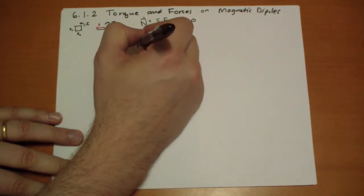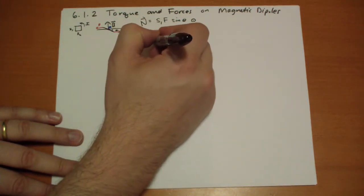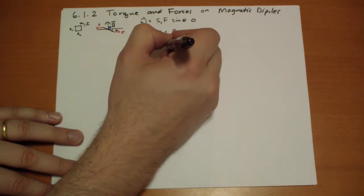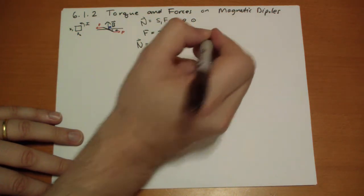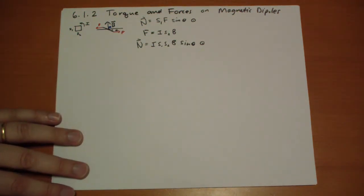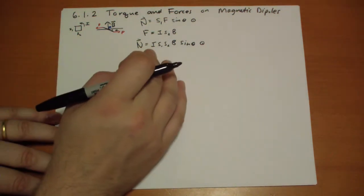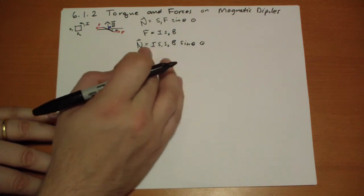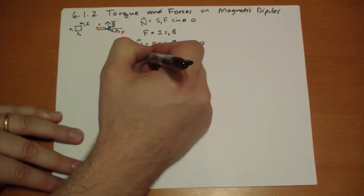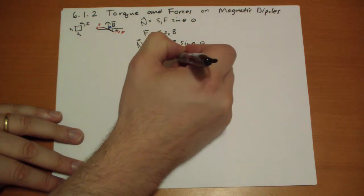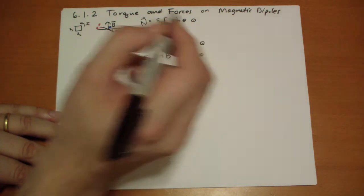So we put those together, equals I, side one, side two, B, sine theta, pointing out of the page. And you'll notice that the magnetic moment is just the area, side one times side two times the current, so that's just MB.